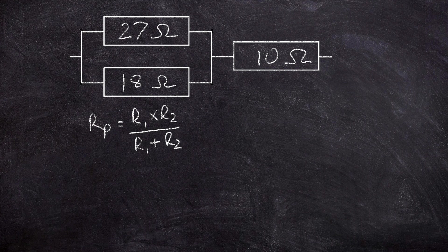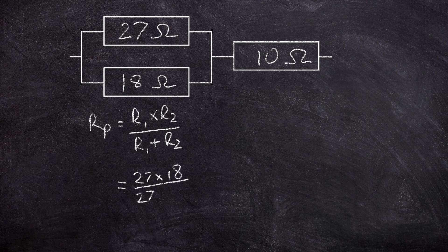So here I've just kind of arbitrarily called this one R1 and this one R2, so we'll put these into the mix now. So we've got R1 times R2, so that's 27 multiplied by 18 divided by 27 plus 18.